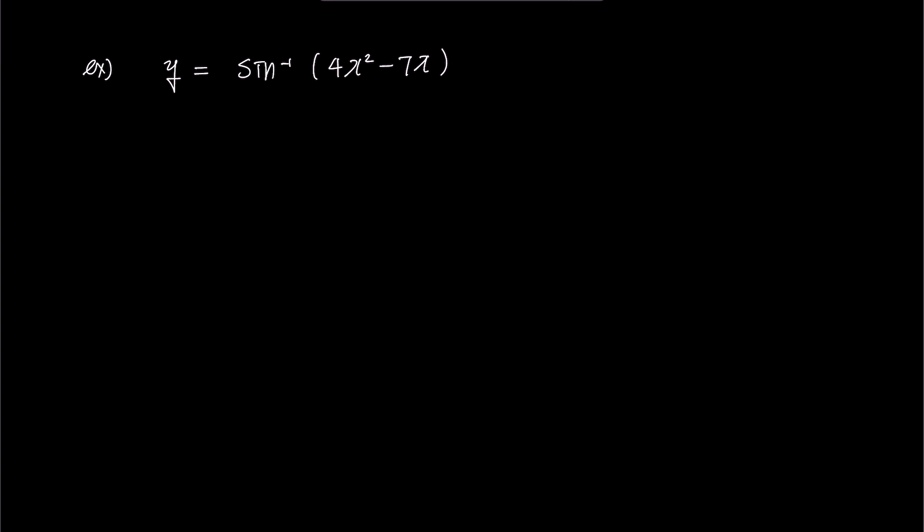To find dy over dx, let's use the formula we derived earlier. Box prime over square root 1 minus box squared. What goes into the box? That's right, the expression inside the green box, which is 4x squared minus 7x. Now, let's substitute these terms into our formula.